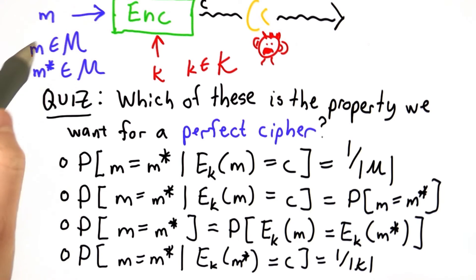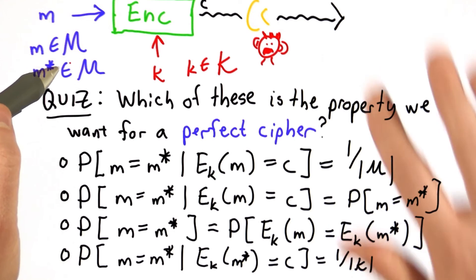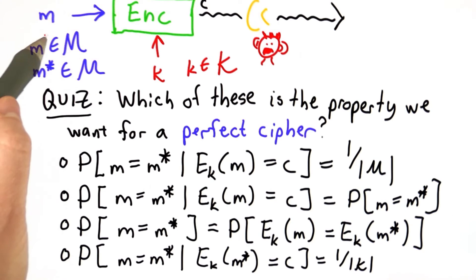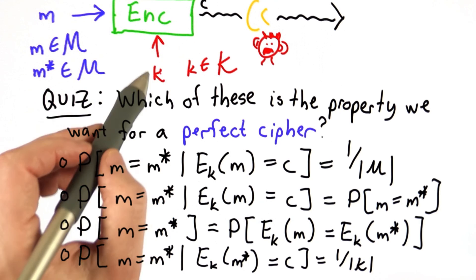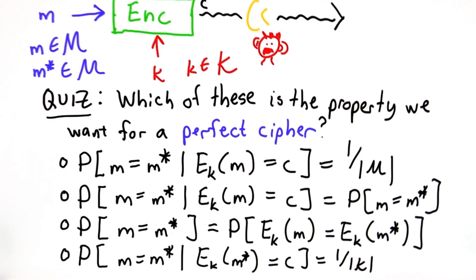We've introduced some notation here. We have a set of possible messages, the uppercase M. And we can select lowercase message m star. Those are both messages selected from M. The attacker's goal would be to tell if the intercepted ciphertext is the same as message m star. That's the attacker's guess. We have encryption using some key selected from the set of all possible keys. We don't know what the key is. Here are the possible choices.